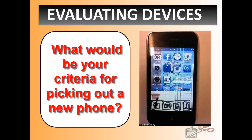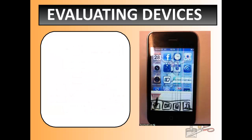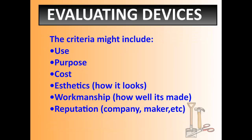Here's a list that may apply to this phone but also applies generally to many devices. When we look at evaluating a simple machine and deciding what to purchase, criteria might include use — what are we using it for? You may decide to go from a Blackberry to an iPhone because of work or school. There's also purpose, cost — probably one of the biggest factors — and aesthetics, how it looks. Most people want something that not only works well but looks good. The last two, workmanship and reputation, are less in the forefront of people's minds but are equally important.